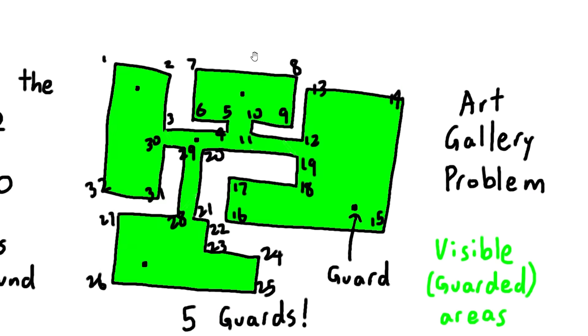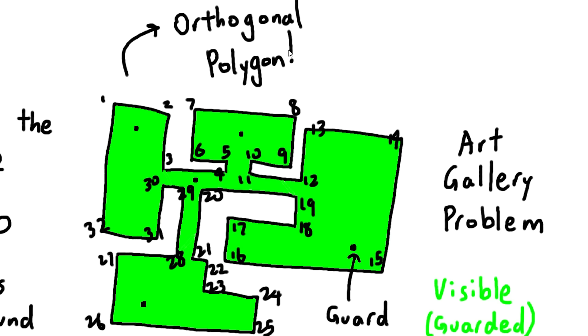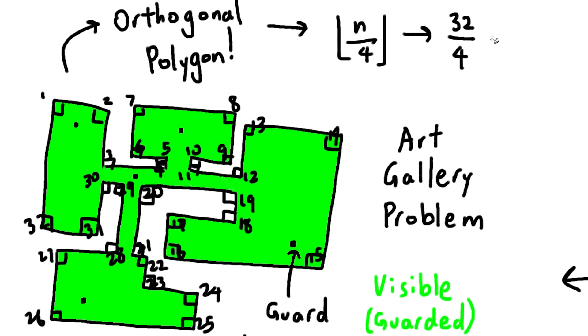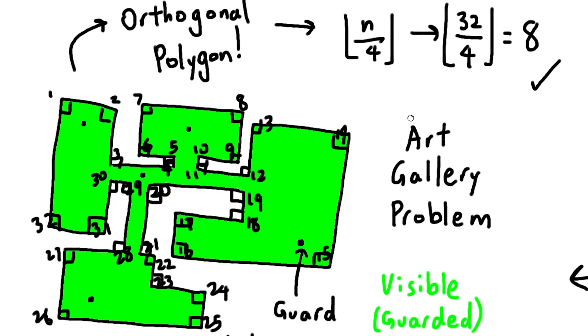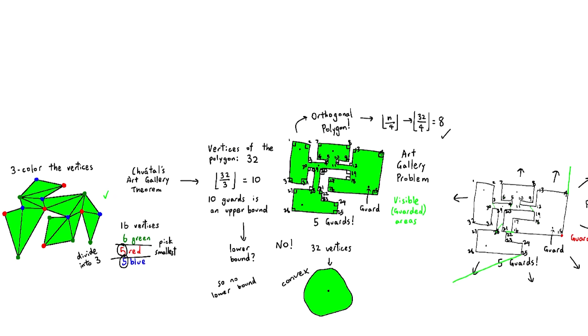Let's take a look at one more problem, which will be about orthogonal polygons. These are just polygons with 90-degree angles. Using this fact, we can get a tighter upper bound, which is just a more accurate upper bound. For example, we get 8 here, which is closer to 4 than 10 was. Anyway, I hope you found that somewhat interesting, and I'll see you in the next video.